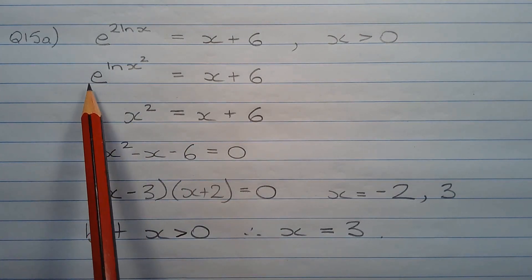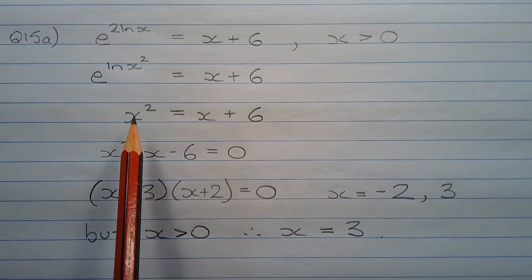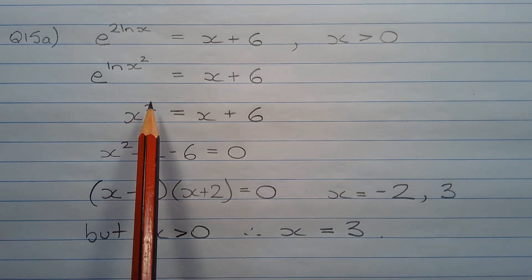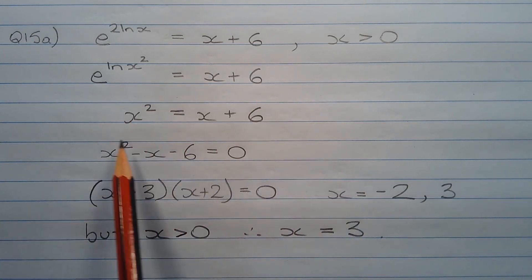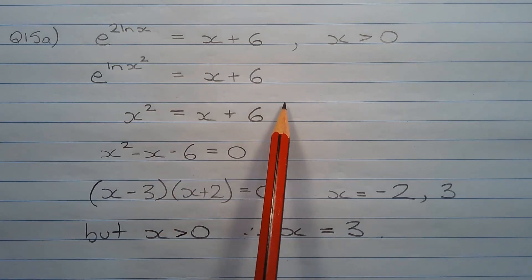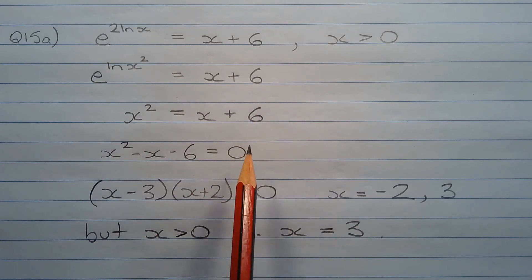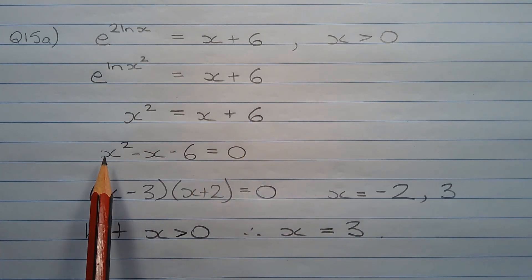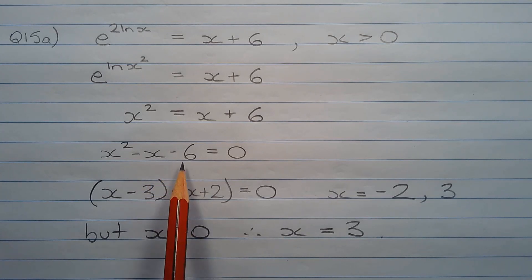Now e and ln will cancel, so we're left with x squared equals x plus 6, which is a quadratic equation. Rearranging so we have 0 on the right-hand side, we have x squared minus x minus 6 equals 0.